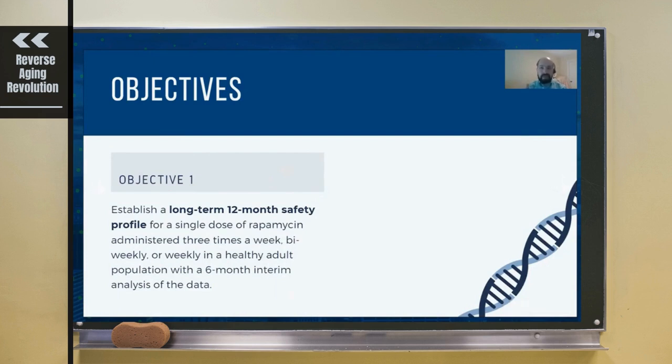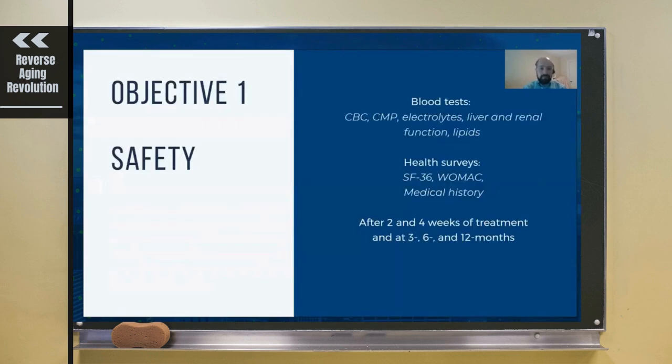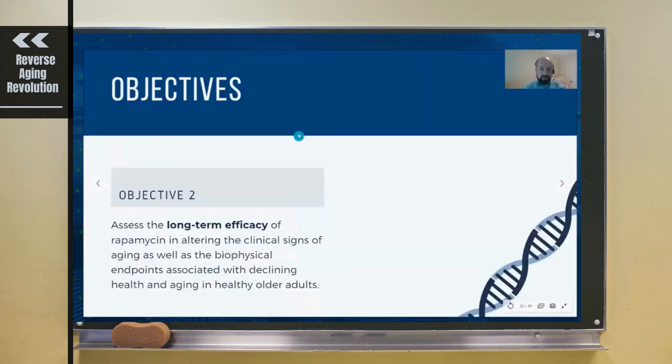We'll be looking at things like CBC, CMP, health surveys, looking for side effect profiles. Objective 2 is long-term efficacy. Obviously we can't wait 20, 30, 40 years for diseases of aging to show up, so we're looking at various different biomarkers as well as health surveys to help determine whether rapamycin is actually helping with the aging process.